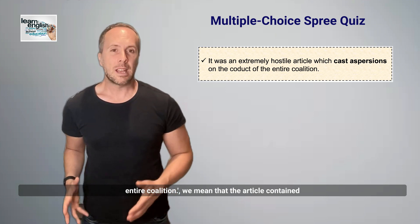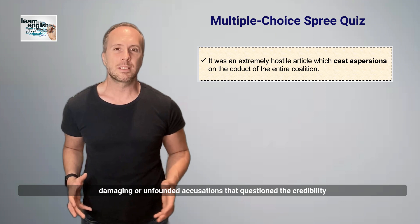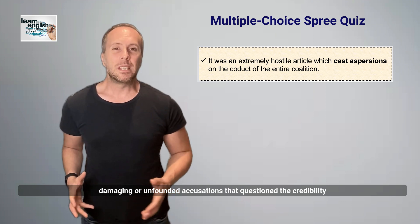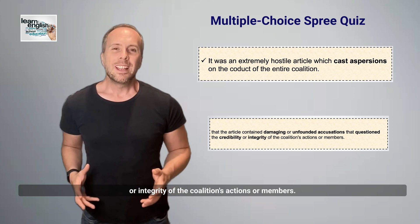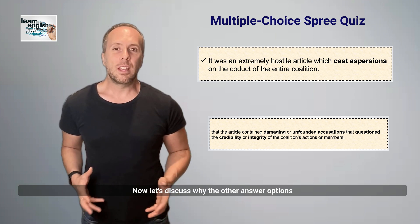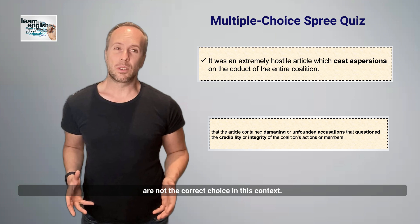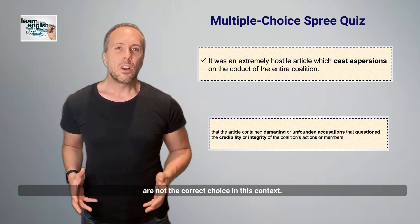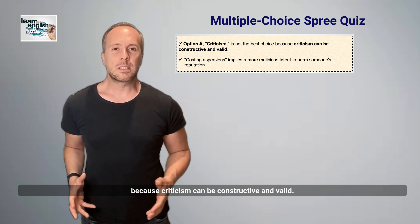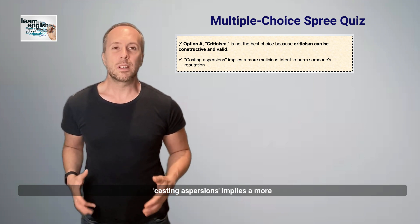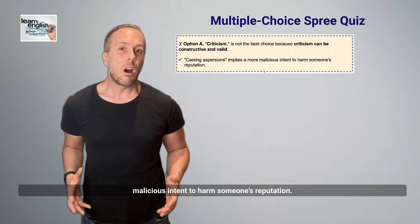Now let's discuss why the other answer options are not the correct choice in this context. Option A, criticism, is not the best choice because criticism can be constructive and valid. Casting aspersions implies a more malicious intent to harm someone's reputation.